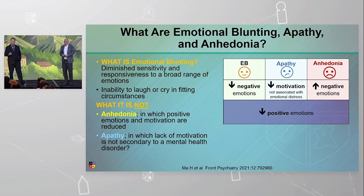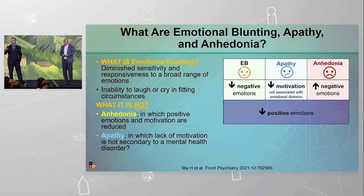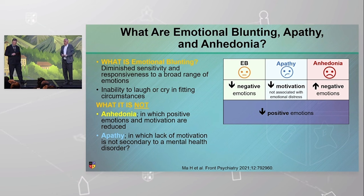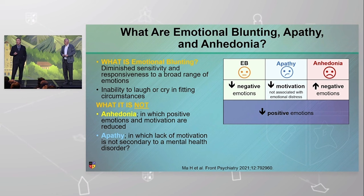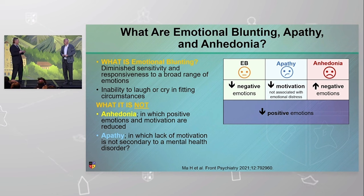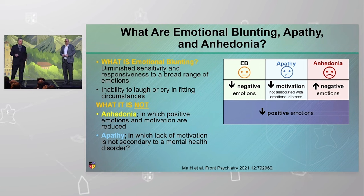Apathy, which is often described more in the world of neurology, is a decrease in motivation which involves aspects of reward, cognition, and the effort one is willing to expend. And then anhedonia — they don't enjoy the positive excursion, but they certainly have the negative excursion. So you can see how anhedonia and emotional blunting differentiate.